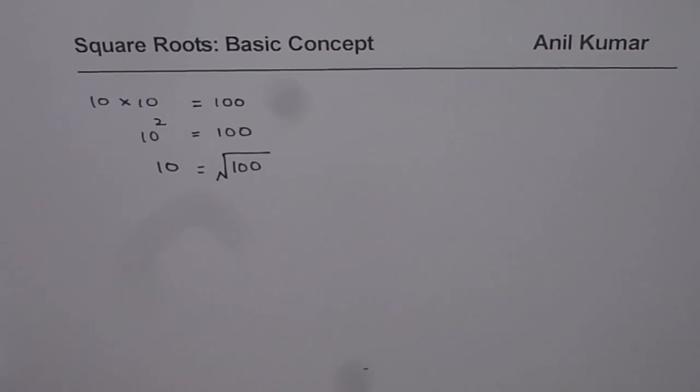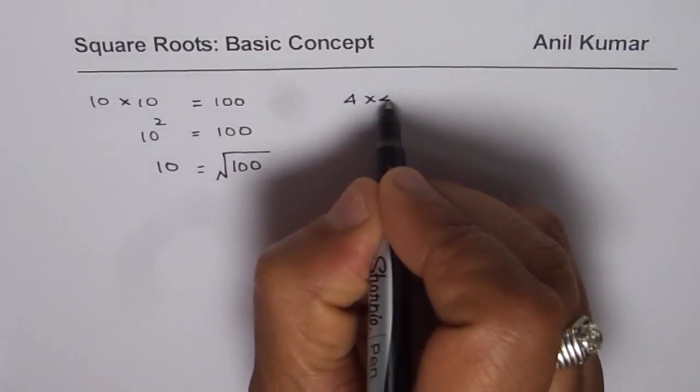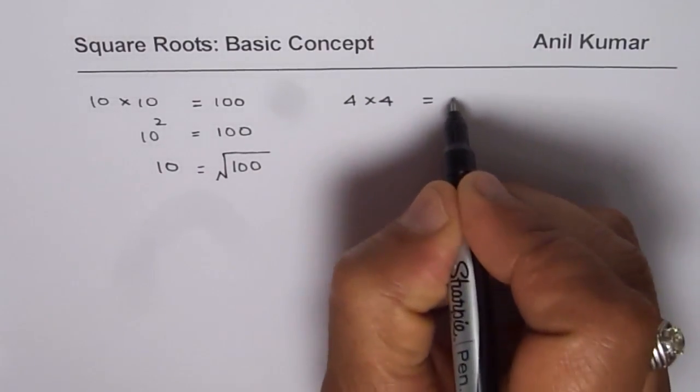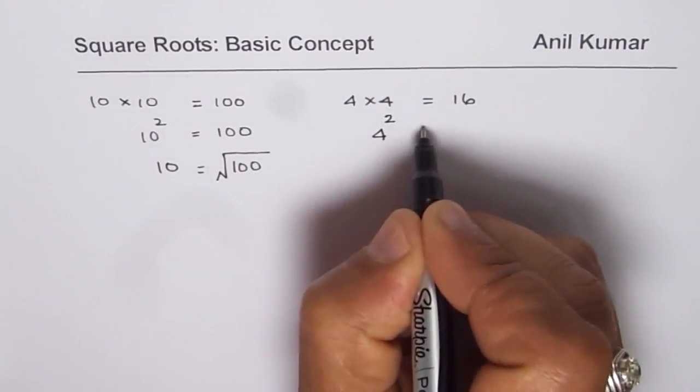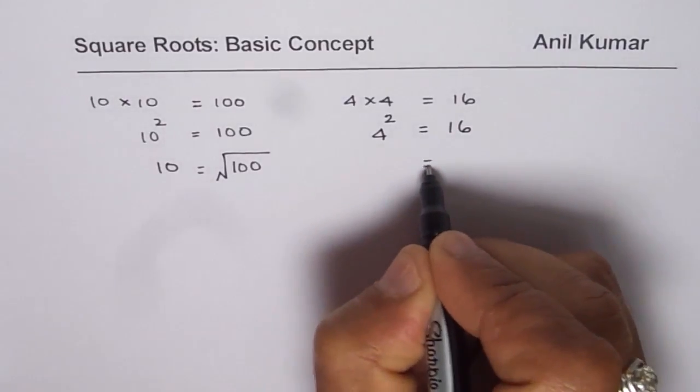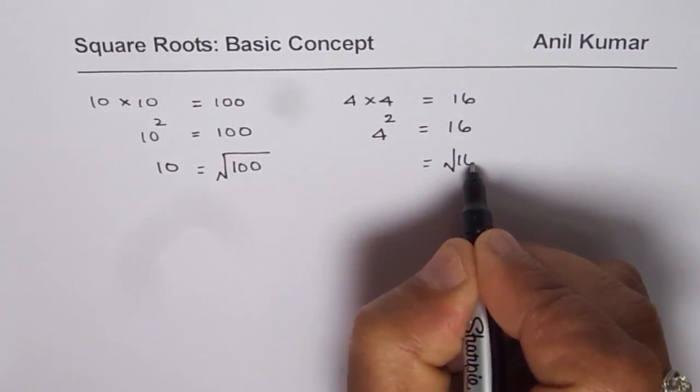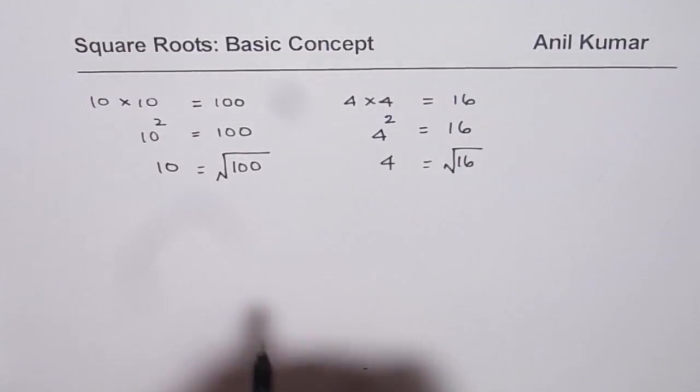Let me give you one more example. Let us say we have 4 times 4. Now 4 times 4 is 16. 4 times 4 is also like 4 square. So 4 square is 16. Now what is square root of 16? Square root of 16 is the number 4.